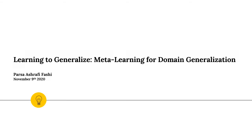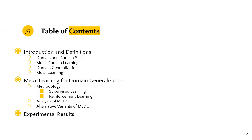Hi, my name is Parsa Ashrafi and this is my presentation for the course STAT 946 Deep Learning. The title of the paper that I'm going to present is Learning to Generalize: Meta-Learning for Domain Generalization. Here we can see a brief overview of the whole slide, divided into three sections: basic definitions, the paper's methodology and analysis, and experimental results.